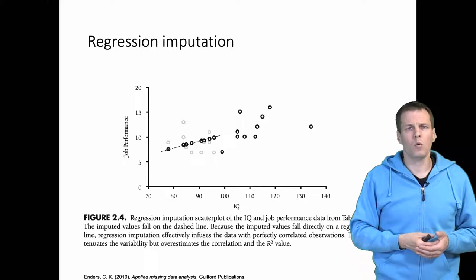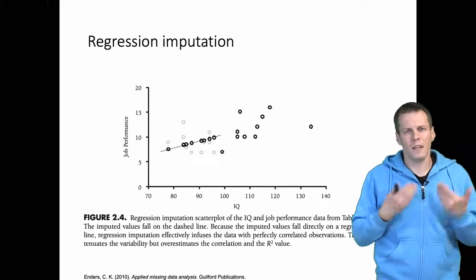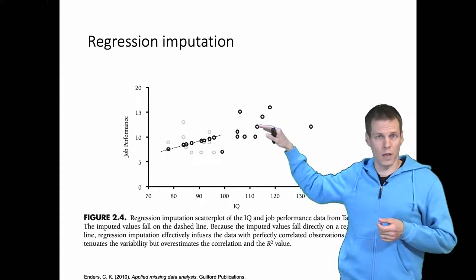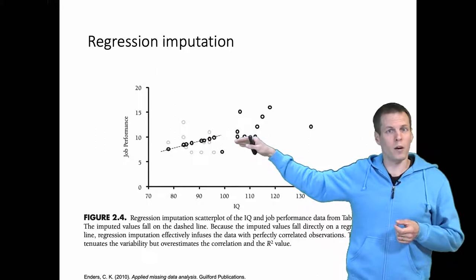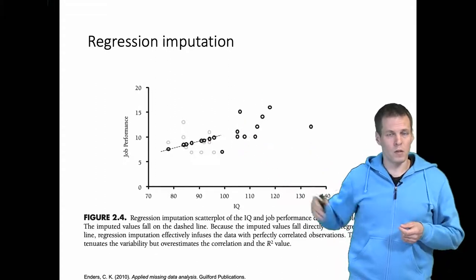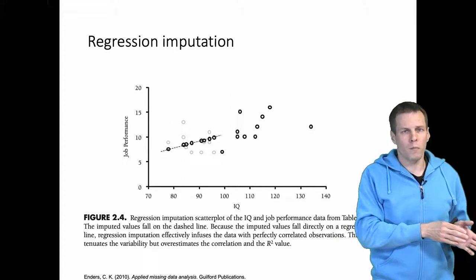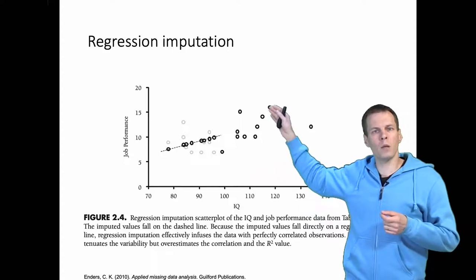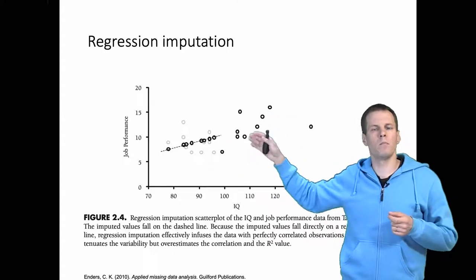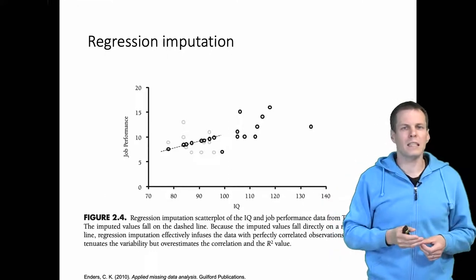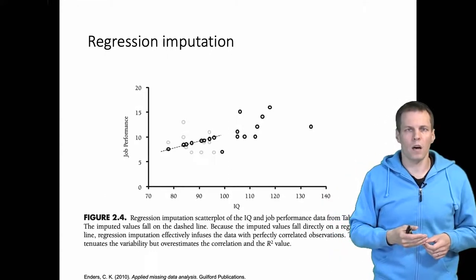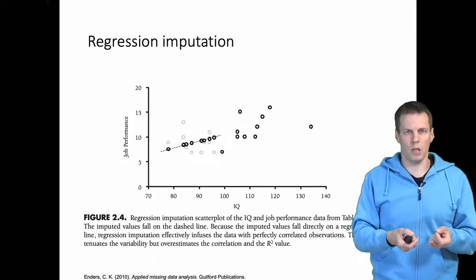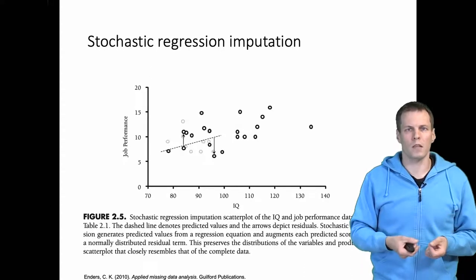The downside of regression-based imputation is that while we estimate the conditional mean or predictive values correctly, we don't model the dispersion at all. In mean substitution, both the dispersion and the expected value are modeled incorrectly. In regression-based imputation, we model the expected value correctly but not the dispersion, so using these data in any subsequent analysis would be highly misleading. We can improve on this with stochastic regression imputation.